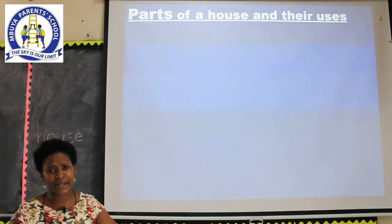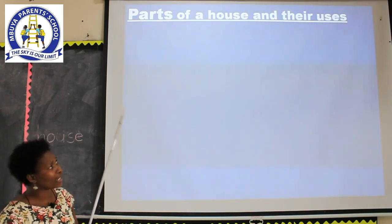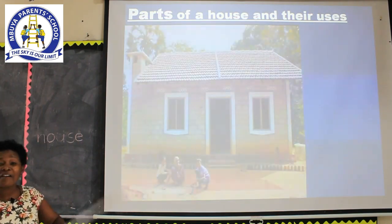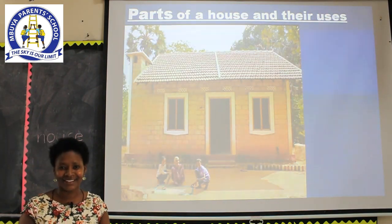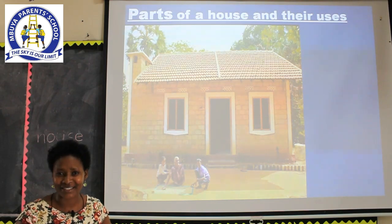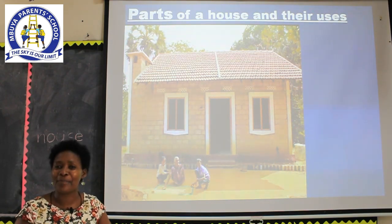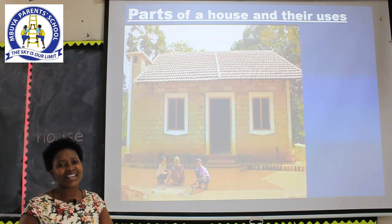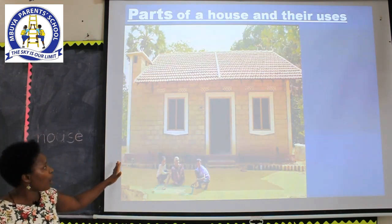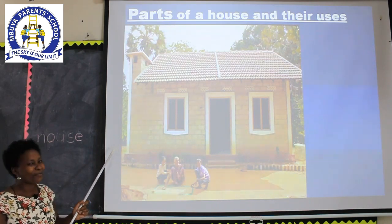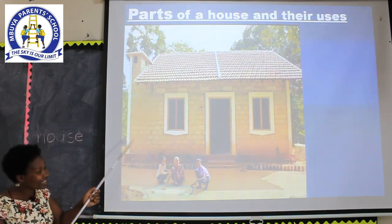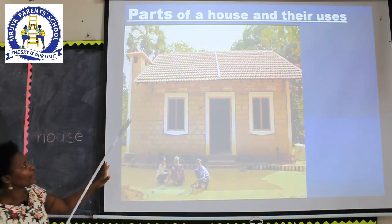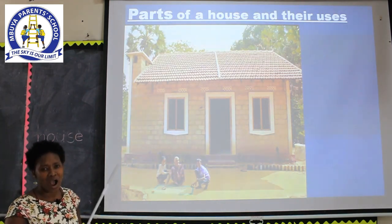Today we are going to look at the parts of the house and their uses. We have very many houses. Examples of houses: we have a flat, a bungalow, a tent, a kiosk — very many. Today we have our bungalow here. Some of you come from flats, but this is a bungalow. So we are going to name the parts on our house.